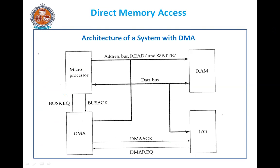This is the architecture of the system with the DMA. If you see in this diagram, it is used for the transfer of data from the I/O device to the RAM. In this diagram you can see the microprocessor, the DMA, the RAM, and the I/O devices. So how does this work? That is the transfer of data from the I/O device to the RAM.